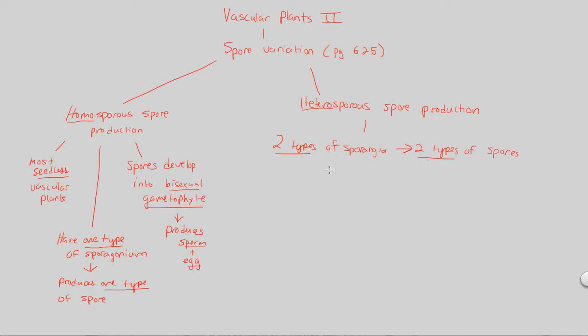The two types that are produced are as follows. You get a megasporangium structure. And then we also have what is known as a microsporangium structure. So these are the two types of sporangia, appropriately named microsporangium, the singular, and megasporangium, the other singular.